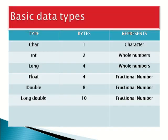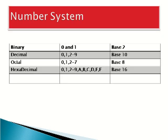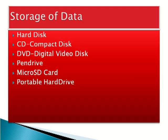Basic data types: integer takes two bytes of memory and so on — please refer the above table for details. Data can be stored in hard disk, CD (compact disk), DVD (digital video disk), pen drive, etc. A CD usually has a memory of 700 megabytes and a DVD has a memory of 4.7 gigabytes.